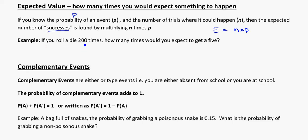So as an example, if you roll a die 200 times, that's n, how many times we're going to try to do it. How many times would you expect to get a five? Well, remember for rolling a die, we've got our six outcomes, and getting a five is only one out of those six. So my probability is equal to one out of six. So my expected value here would be equal to 200 times one divided by six. And in your calculator, if you put that in, you get 33.3 times, which we can round to roughly 33.